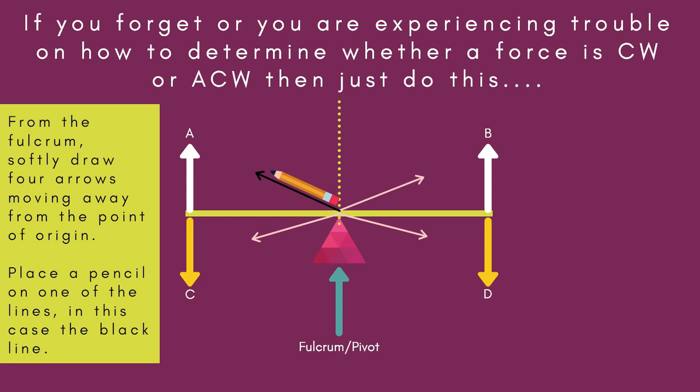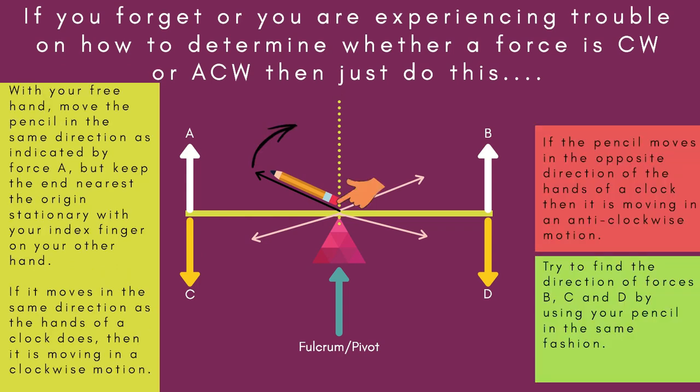From the fulcrum, softly draw four forces of force. You have three arrows moving away from the point of origin. Place a pencil on one of the lines, in this case the black line. With your free hand, move the pencil in the same direction as indicated by force A, but keep the end nearest the origin stationary with your index finger on your other hand.